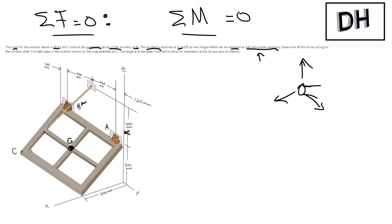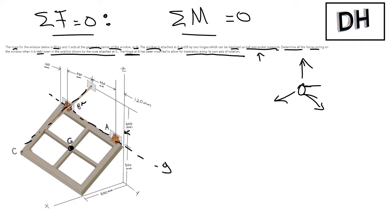Specifically, think of the socket in your shoulder — it's very similar. We want to determine all the forces acting on the window as it's held in the open position by the rope attached at C, so we're going to have some form of tension. The hinge at B has been modified to allow for translation along its own axis of rotation, so at B we're only going to have reactions in x and z — Bx and Bz. But for A, we have reactions in x, y, and z, because there's no modification for the hinge at A. Always read the question.